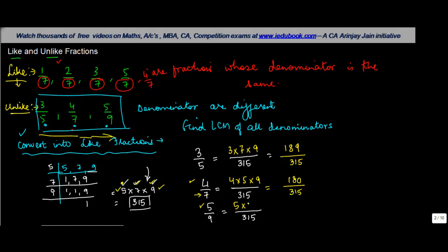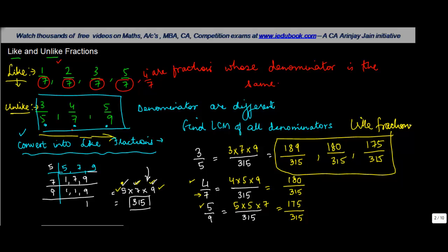So you need to multiply even the numerator by the same number: 5 into 5 into 7. 5 times 5 is 25, 25 into 7 is 175. Now if you notice, this is 189 by 315, this is 180 by 315, 175 by 315. All these fractions have become like fractions because their denominator is common.